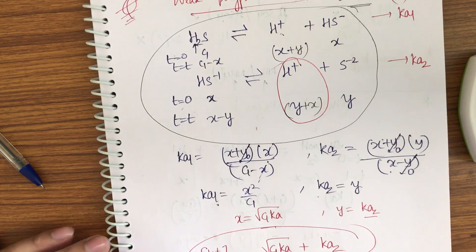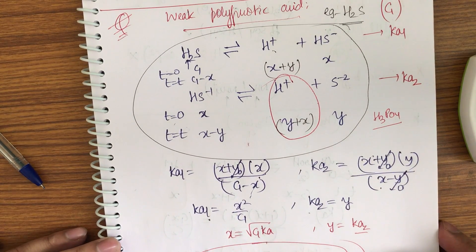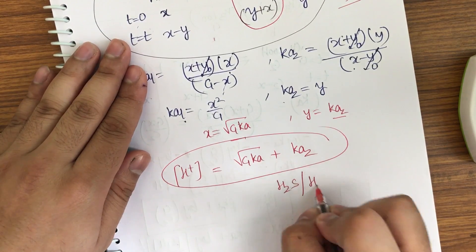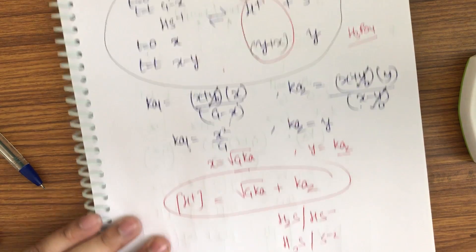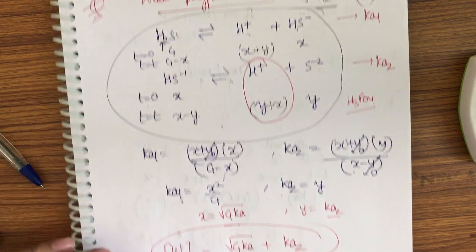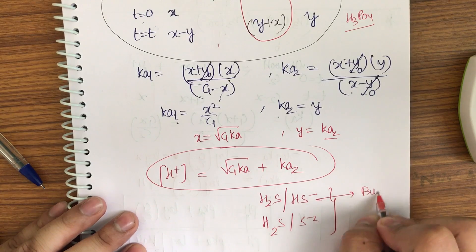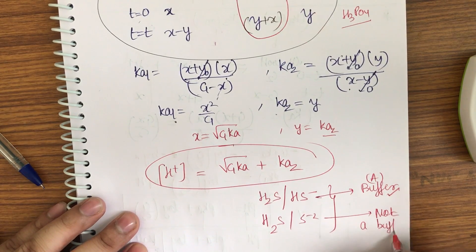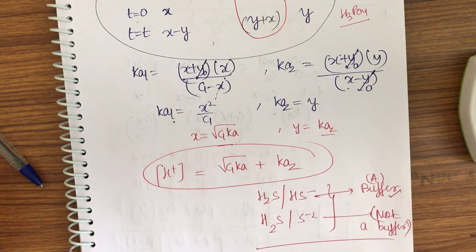The same approach applies to H₃PO₄, which dissociates three times. For buffer identification with polyprotic acids: H₂S/HS⁻ is a buffer (one proton removed), but H₂S/S²⁻ is not a buffer because two protons are removed. You must remove only one proton to form a valid conjugate acid-base pair for a buffer.